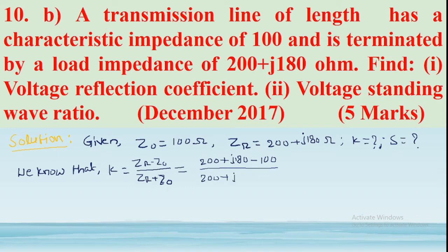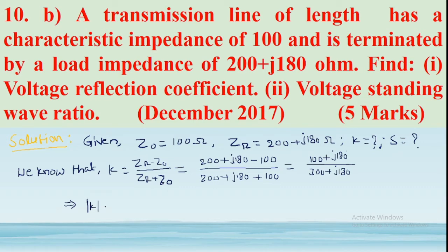The denominator is (200 + j180) plus 100, which gives 300 plus j180. Now we determine the magnitude of the reflection coefficient by taking the magnitude on both sides. The magnitude of K equals the magnitude of (100 + j180) divided by the magnitude of (300 + j180).